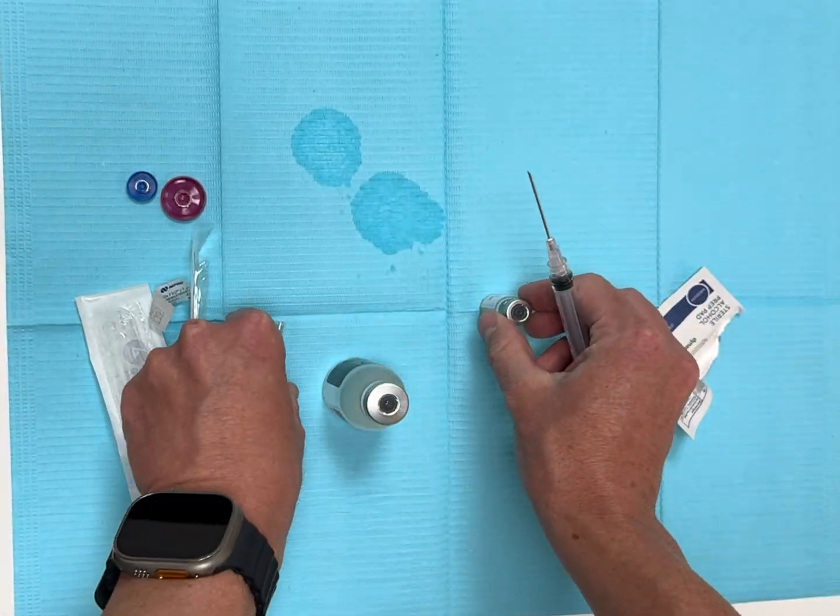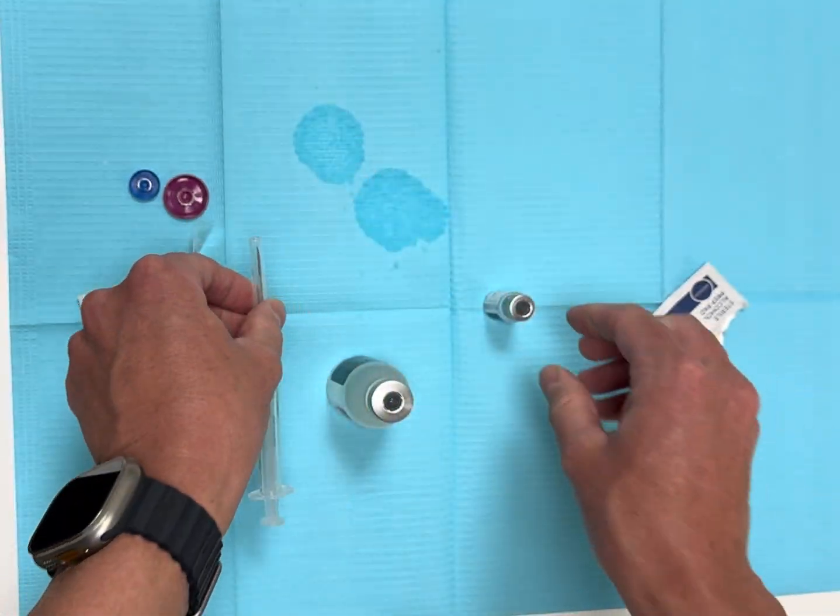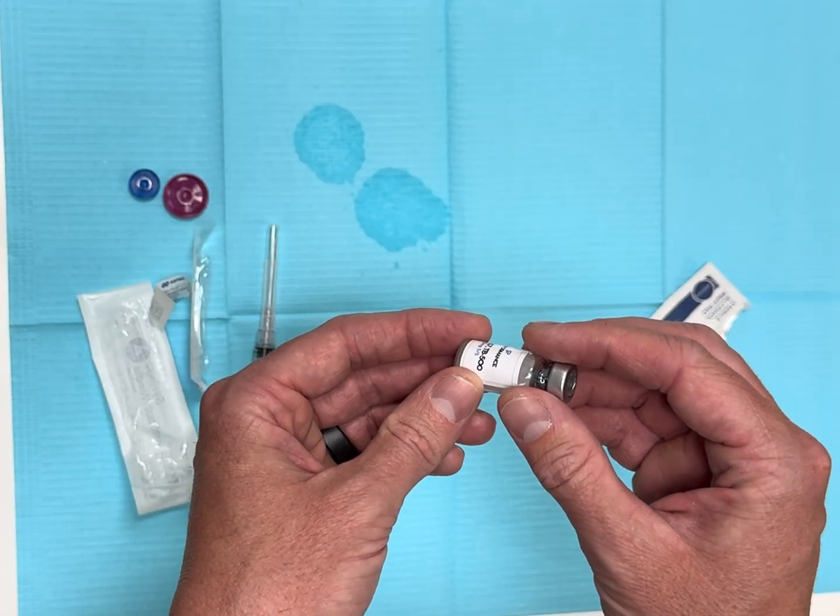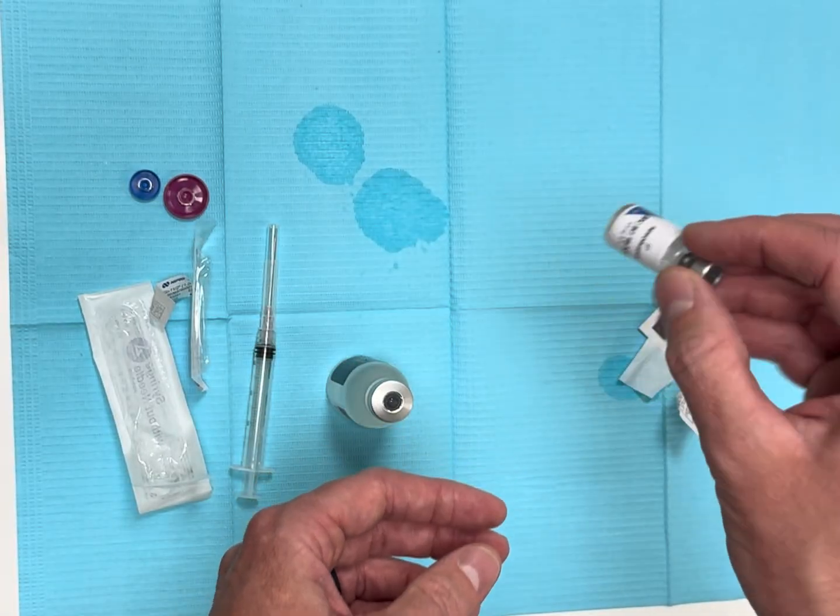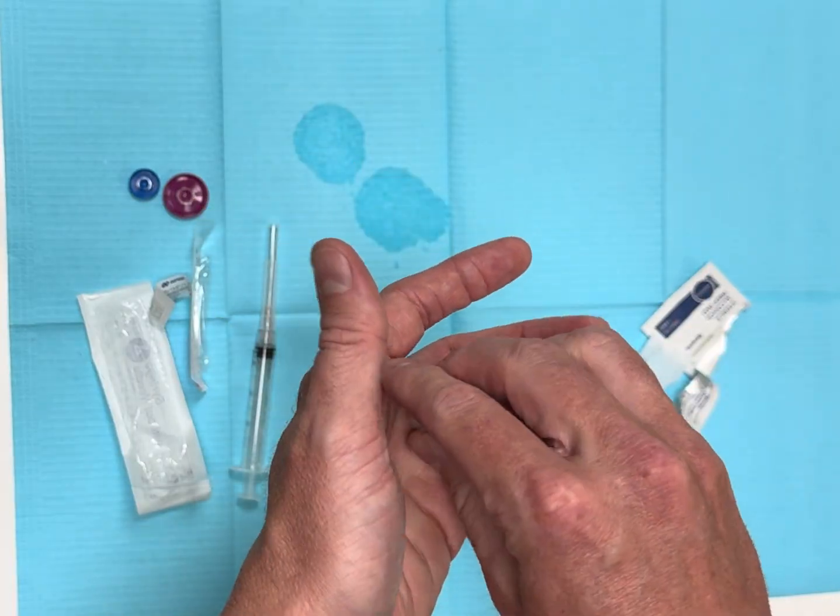You can pull the syringe out, put the cap back on the needle, and then what I do is set a timer for four minutes. You do not want to shake the peptide, you want to nicely swirl it or roll it in your hands for four minutes